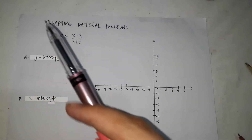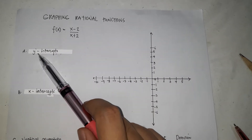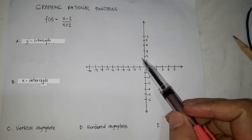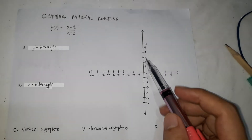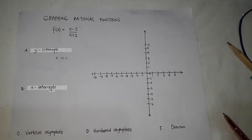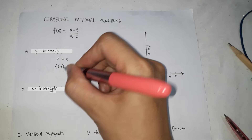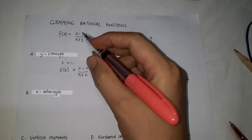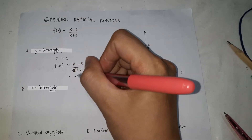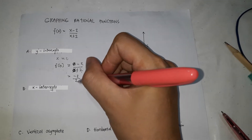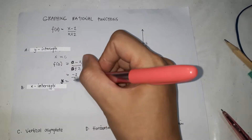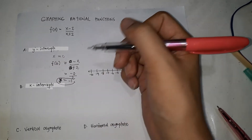The first one is the y-intercept — the point where the graph intercepts the y-axis. For example, this is the y-axis; where the graph passes through the y-axis, that's the y-intercept. To get that, let x be equal to 0. So f(0) equals (0 minus 2) over (0 plus 2), which is negative 2 over positive 2. Therefore, y is equal to negative 1, because negative 2 divided by 2 is negative 1.